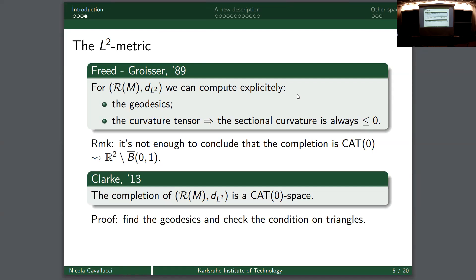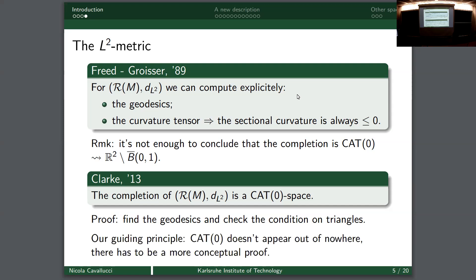So the curvature computation is formal - you can see there is some negative curvature, but then you have to exploit this fact further. Indeed, Clark in 2013 proved that the completion is actually a CAT(0) space. He gave an intrinsic description of the completion and understood how the geodesics behave in this completion - then you take triangles and check the CAT(0) property, which you can do if you know all the geodesics.